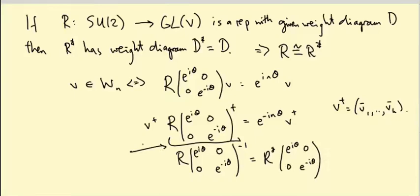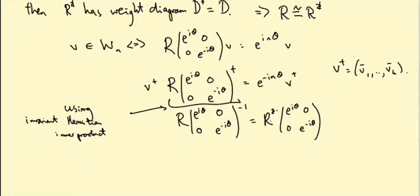In other words, that's R star of e^(iθ), 0, 0, e^(-iθ). So this is using the existence of an invariant hermitian inner product. Okay, so this is exactly telling us that R dual of this matrix has V dagger as a weight vector of weight minus N.